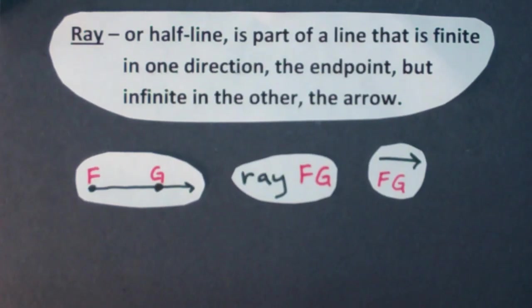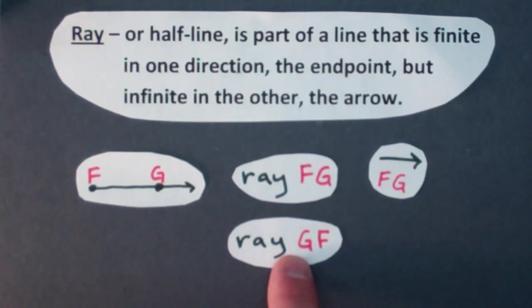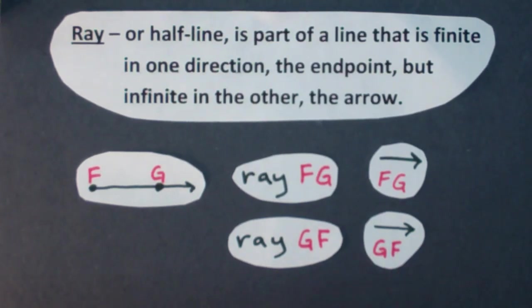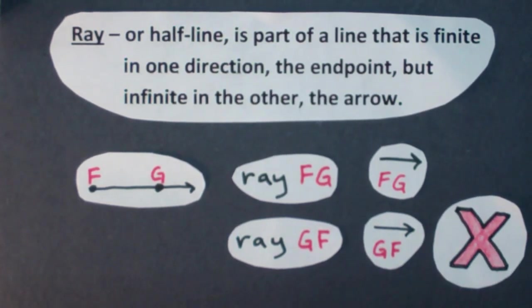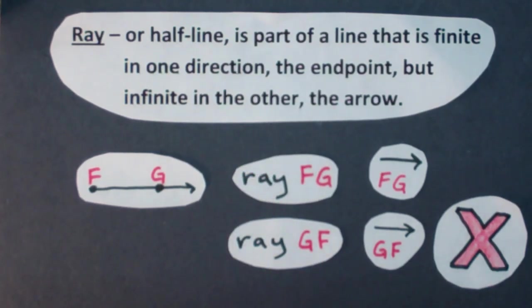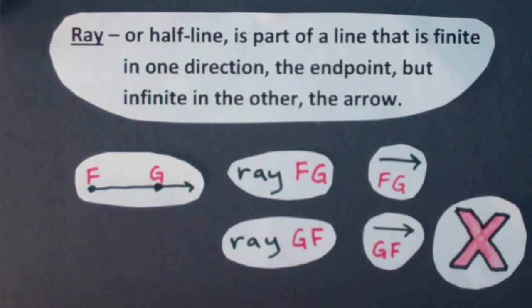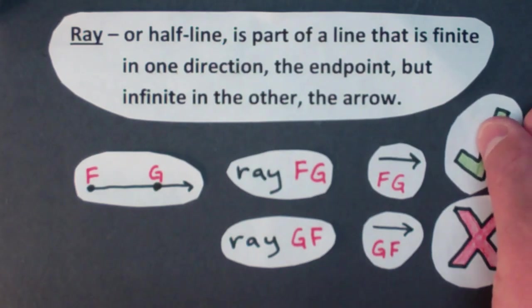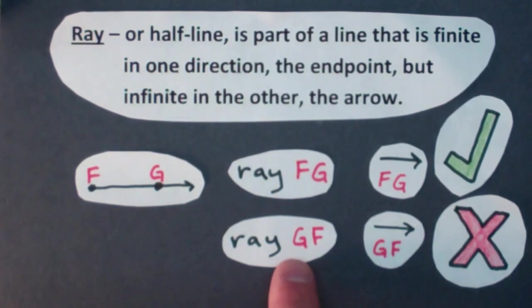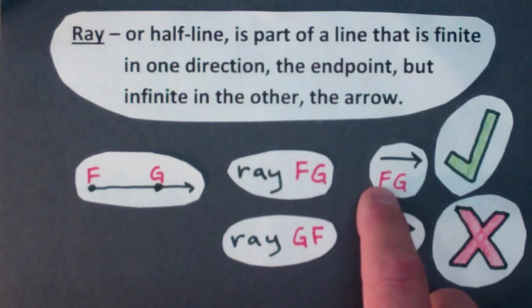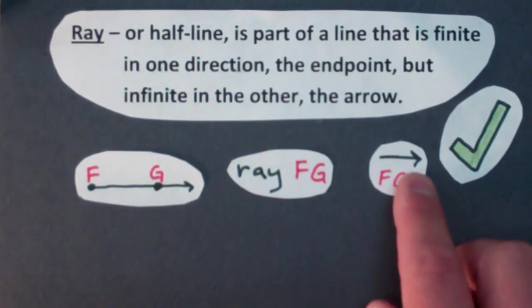But what about like in a line segment or in a line, can I swap the end points and call this ray GF or with the symbol ray GF? The answer is no. You can't do that. There's only one way to name a ray and that's starting with the end point and then it travels through another point. So you can call this ray FG or use the symbol ray FG. That is correct. But you cannot swap the end point and put it after the point that it travels through. It starts at F here. That's the only way you can write down what this ray is.